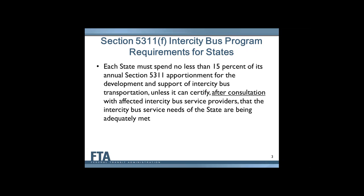States might want to start with a planning study that assesses demand for intercity services, determines what services already exist, identifies barriers for accessing intercity services from rural areas, and looks at alternatives for removing those barriers. At that point, they may want to publicize the availability of intercity funding and invite intercity operators and others to apply for the funds with specific project proposals. That's the process in a nutshell.